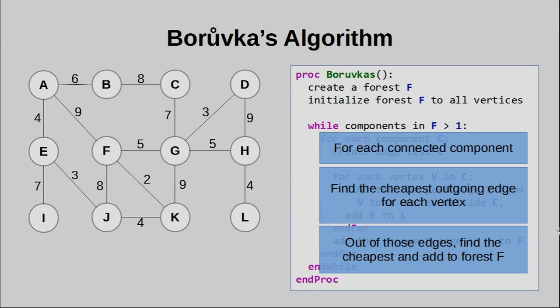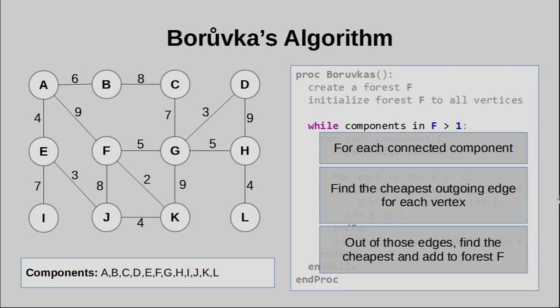So basically, we can sort of simplify this by expressing things like this. For each connected component, we want to find the cheapest outgoing edge at each vertex. Then out of those edges, we want to find the cheapest one, and then add that to the forest F. Now, the first pass of Boruvka's algorithm is extremely trivial, because basically, every single vertex is its own disconnected component. As a result, what we're going to do is we're going to visit every component, look for its cheapest outgoing edge, and then simply add that to the forest F. Let's see how this works out.